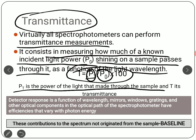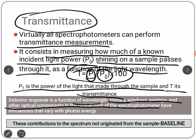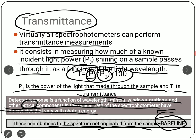The detector responds based on several factors beyond just the sample signal — including wavelength, mirrors, windows, gratings, and other optical components in the spectrophotometer's optical path, including the sample holder or cuvette in UV-visible spectroscopy. These components affect the photon power reaching the sample and detector. Contributions to the spectrum not originating from the sample are called the baseline.